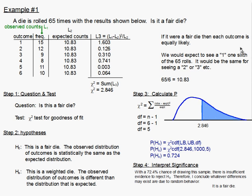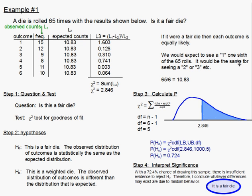Now we can move on to step four and interpret the significance. With a 72.4% chance of drawing this sample, there is insufficient evidence to reject the null hypothesis. Therefore I conclude that the differences — like the 15 and the 8 — are just due to random behavior, and it is in fact a fair die.